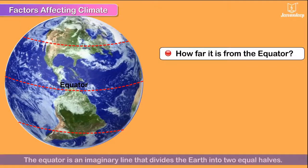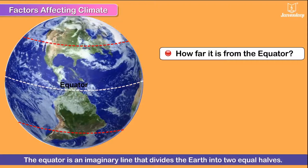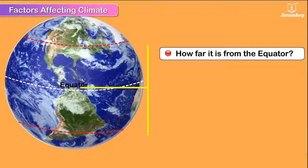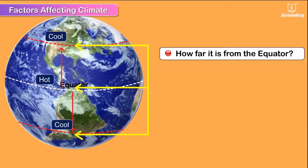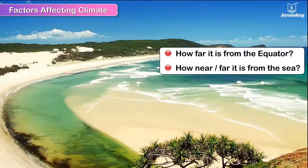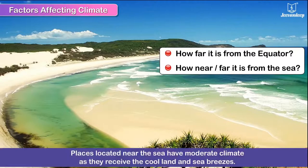Factors affecting climate: how far a place is from the equator. The equator is an imaginary line that divides the earth into two equal halves. It is hottest at the equator and becomes cooler as one goes away from it.